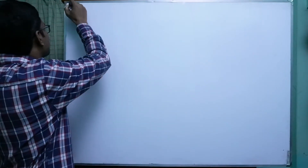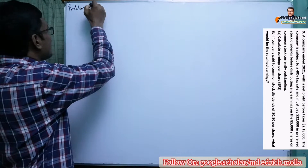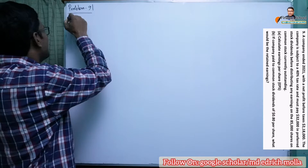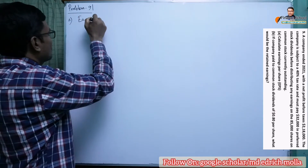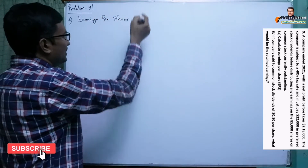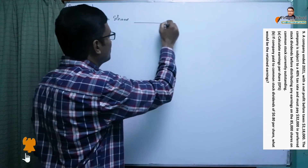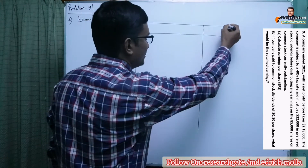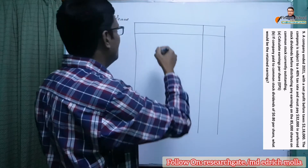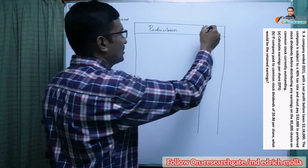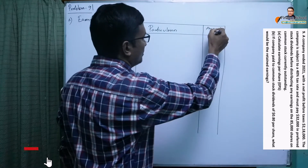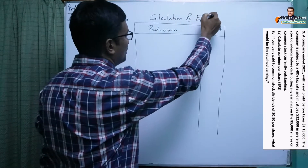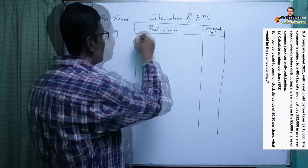For problem number nine, we begin with Requirement A: earnings per share. We draw a table to show the calculation of EPS. The first column shows the particulars or details, and the next column shows the amount in dollars.